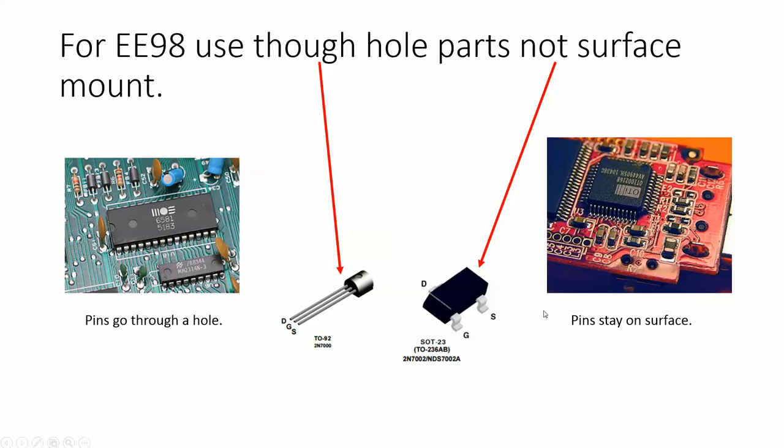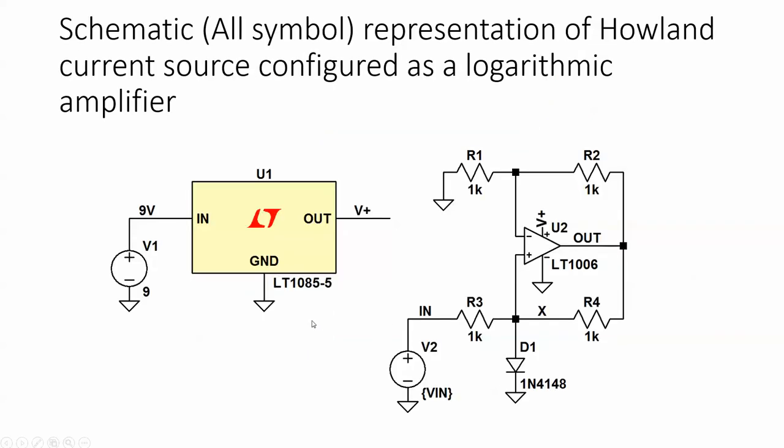In EE98 we're going to use this. Let's do a quick example. This is a schematic of a Howland current source configured as a logarithmic amplifier. Here is the voltage regulator—it gives five volts, and that net name gets connected directly here. You could call it an invisible wire.